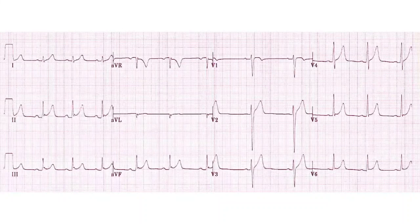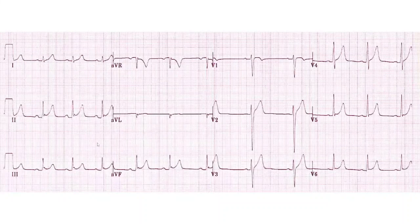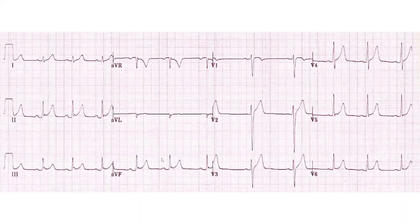This is benign early repolarization. Remember, this is one of those EKGs where history really comes into play. Is this a young, athletic person — particularly a male under 50 years of age? Look at the ST segment elevation — it doesn't look quite right. For one, there's no reciprocal depression. There's also notching in the T wave, and unlike a traditional STEMI where the ST segment elevation kind of goes down, this one actually swoops up almost like a smiley face. Be prepared to see this kind of thing because athletes have chest pain too.